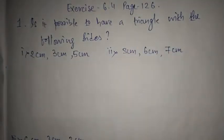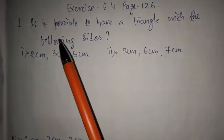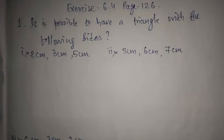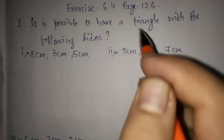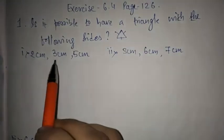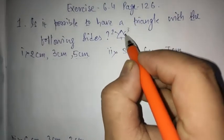So here we have the first question. The question states: is it possible to have a triangle with the following sides? This is a new type of problem and you are not very much familiar with it. To understand this, you should have the knowledge that to form a triangle — a triangle has 3 sides — that's why 3 measurements are given. Here, 2, 3 and 5 are given.